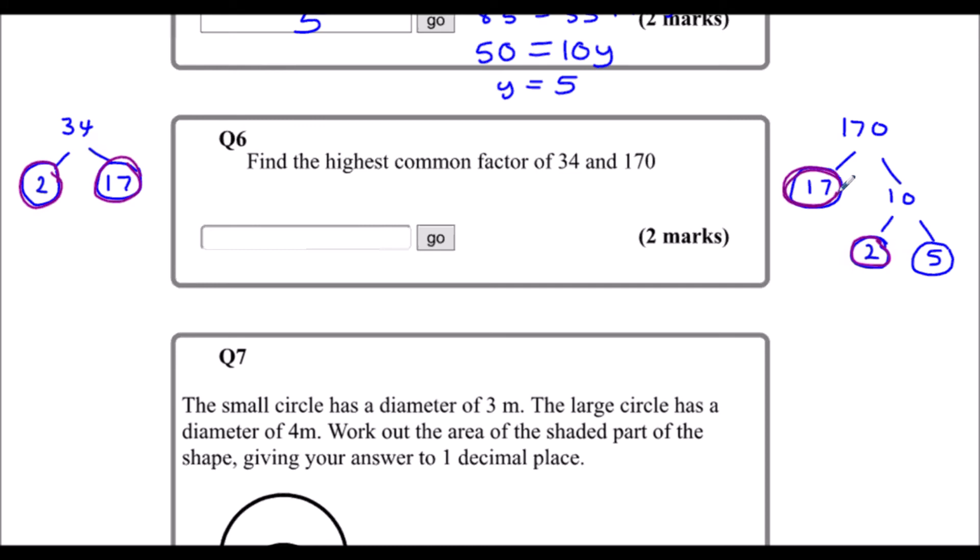So they're the common prime factors. The highest common factor is 2 times 17, which is 34. So the highest common factor is 34. 34 and 170 are both in the 34 times table.